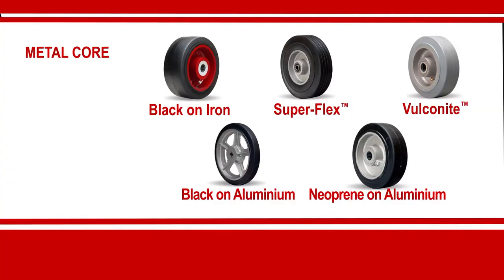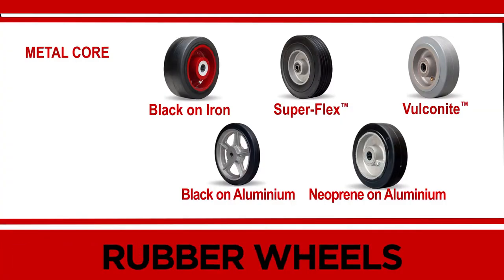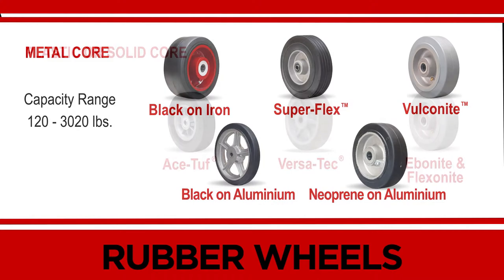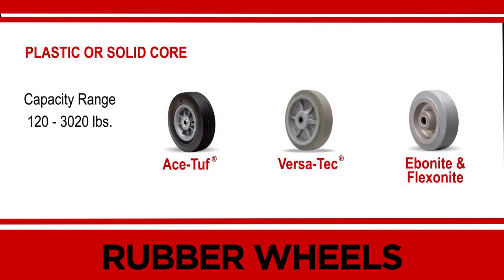Our final wheel type is rubber. Rubber tread bonded to a cast iron, aluminum, or even a plastic center is an old standby of the caster industry. They are rugged, long-wearing wheels that cushion loads but carry very little capacity.